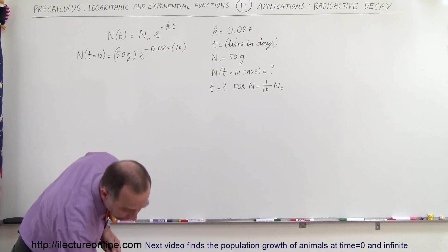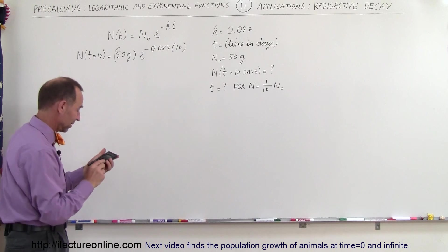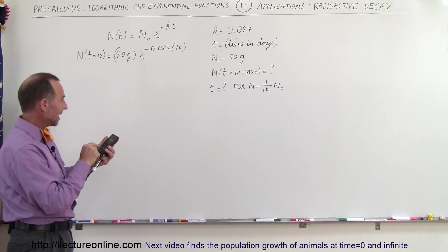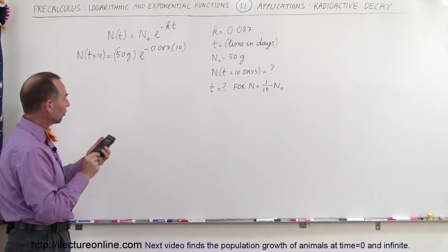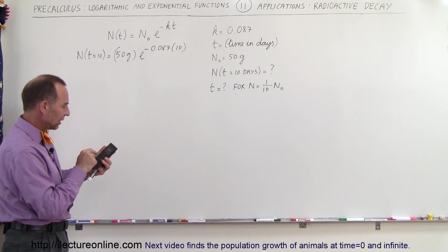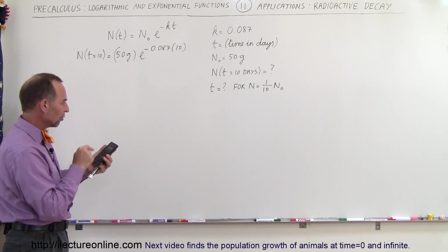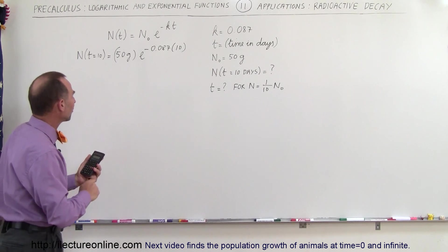Alright, now we need a calculator, we have the equation right there. So we have 0.087 multiplied by 10, we need a negative sign, that becomes the exponent of e to the x, and then we multiply times 50 grams.